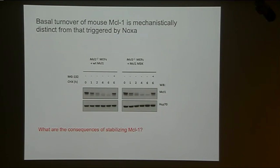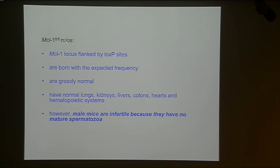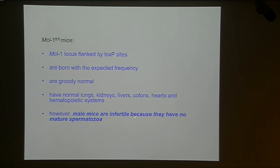One question you could ask is: what are the consequences if you just stabilize MCL1? In many cancers it's often marked by overexpression of BCL2. We came upon a very useful finding looking at mice engineered to harbor a flox allele of MCL1, made so that MCL1 can be deleted at will in a specific time and place. These mice were born with expected frequency and are basically grossly normal, looking very normal in most organs including the hemopoietic system. The one thing that puzzled us for quite a while is that the male mice are infertile.